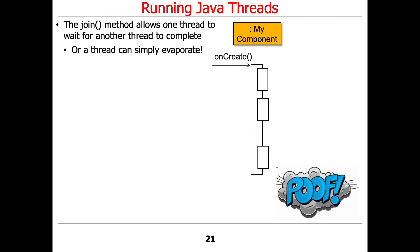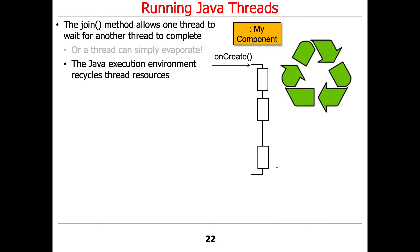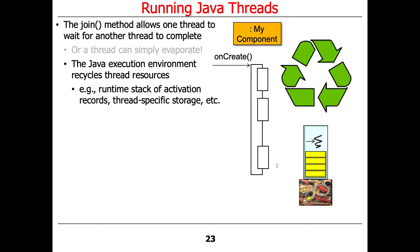The other way you can handle thread termination is to just let it evaporate — just disappear. In that case, nobody's joining; the thread just goes away. Once it's evaporated, the Java execution environment can reclaim the thread and reuse its resources. The operating system kernel can reclaim the runtime stack and registers for use with some other thread. It'll clean up thread-specific storage, the runtime stack of activation records, and so on.